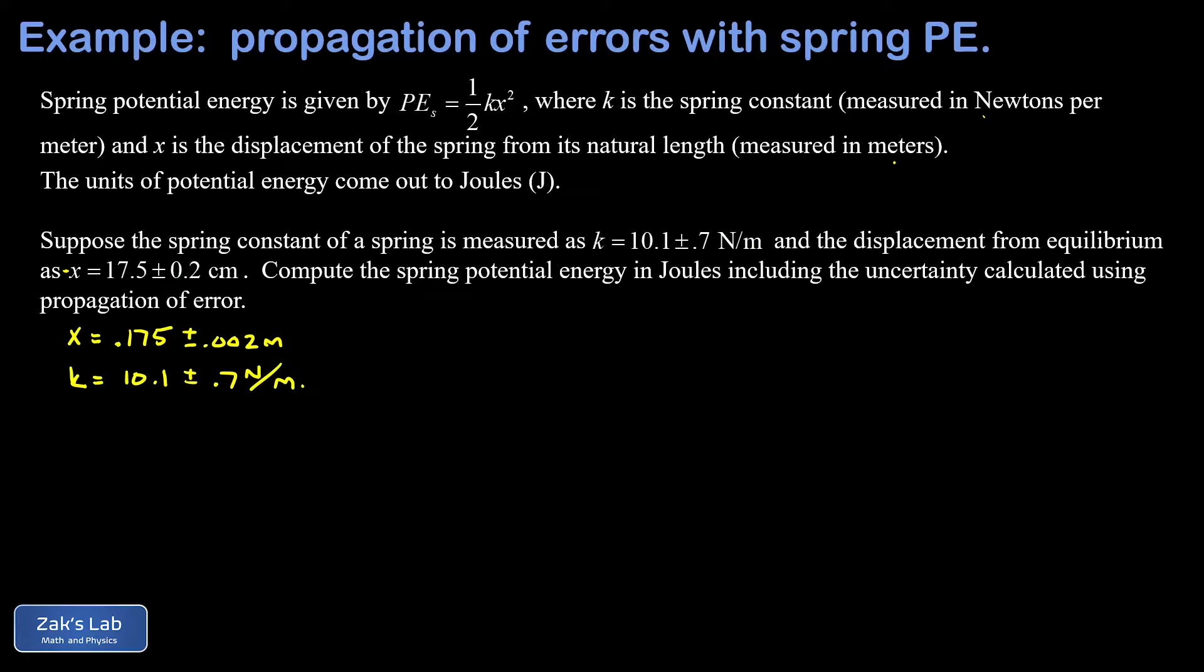We're asked to compute the spring potential energy and then put a plus or minus on it using propagation of error. The first step is to get the potential energy itself: one half kx squared. We plug in k=10.1 and x=0.175, square that, and I get 0.1547 joules, keeping some extra precision for now.